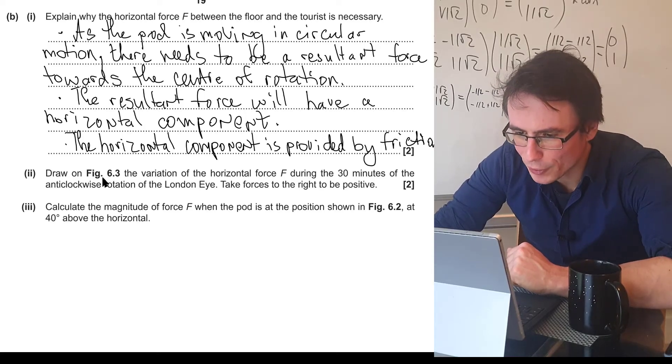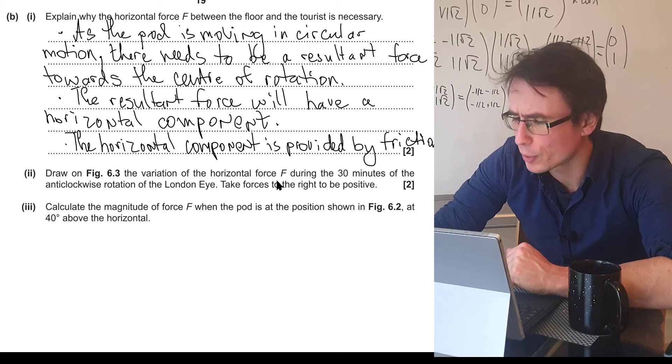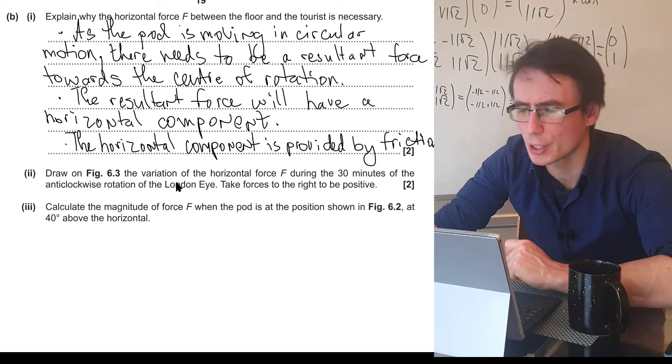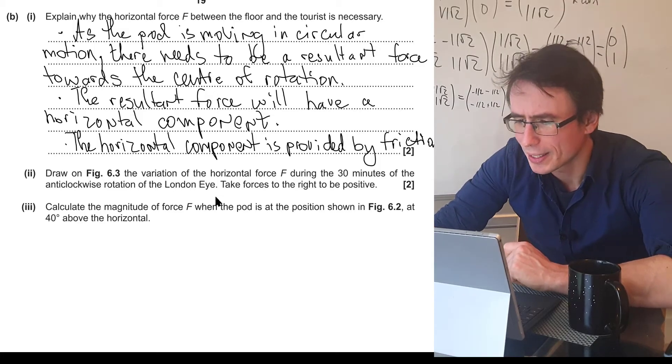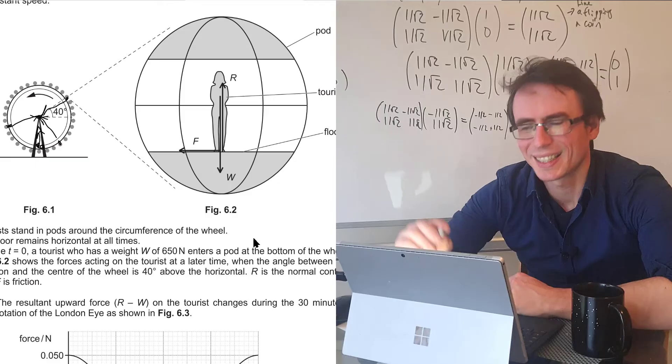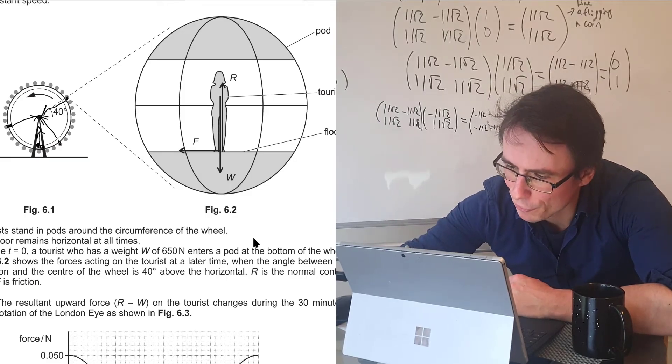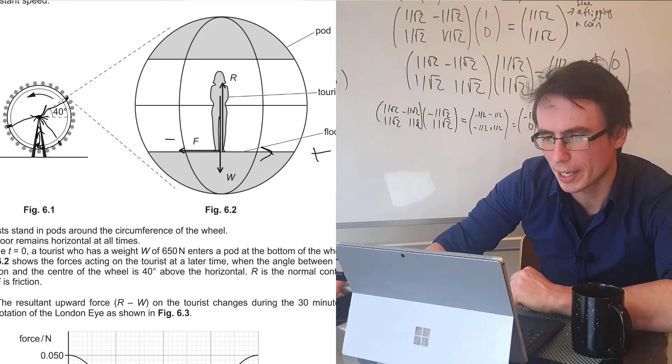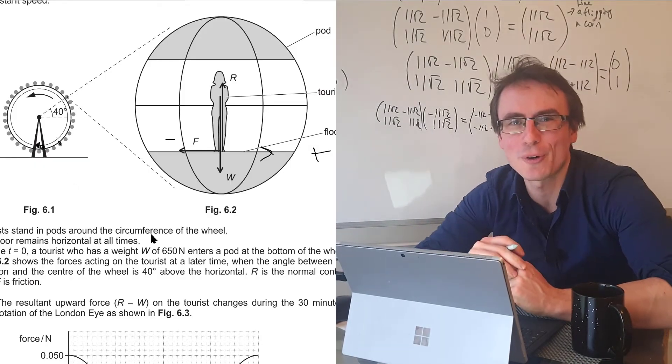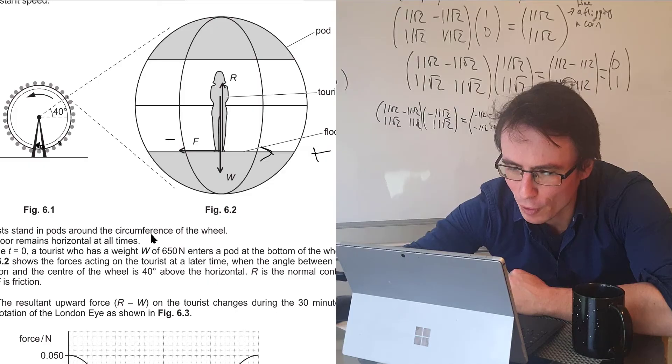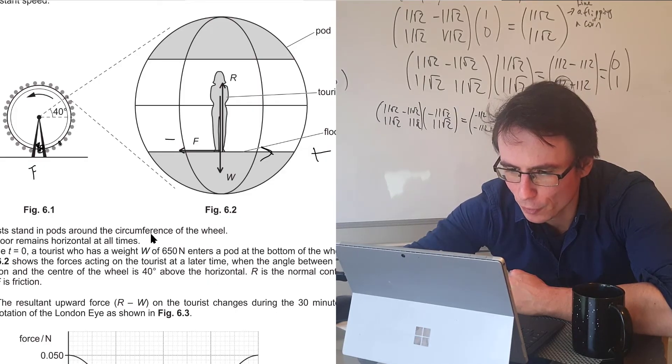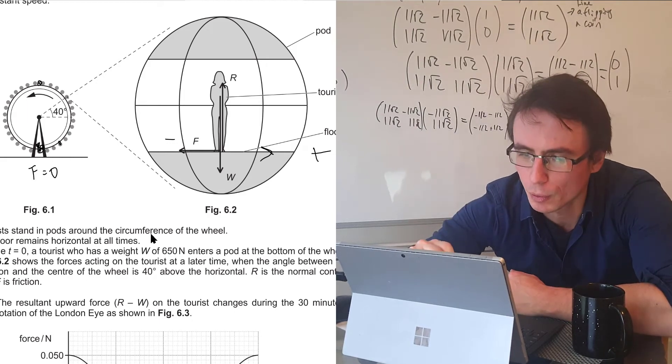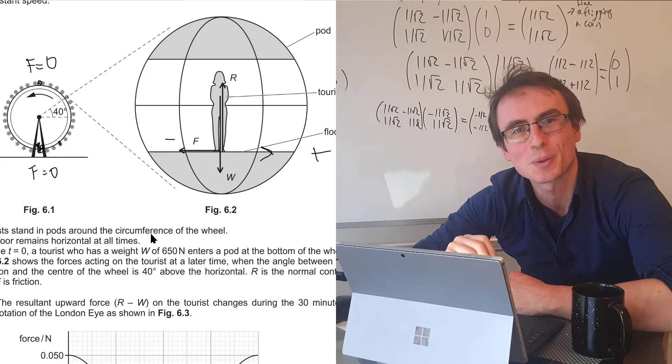Next part. Draw on figure 6.3 the variation of the horizontal force F during the 30 minutes of anti-clockwise rotation of the London Eye. Take the forces to the right to be positive. This last statement simply means that if a force is acting this way, then we're going to take this to be positive, and this one here to be negative. Now, first of all, when we are in this spot, the horizontal force F will be zero, and when we're directly opposite, the horizontal force will once again be equal to zero.